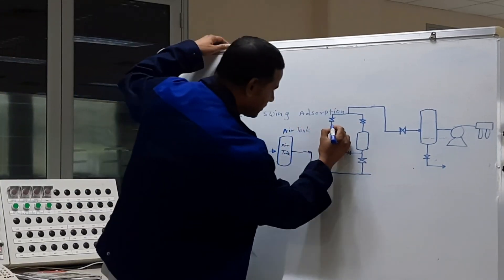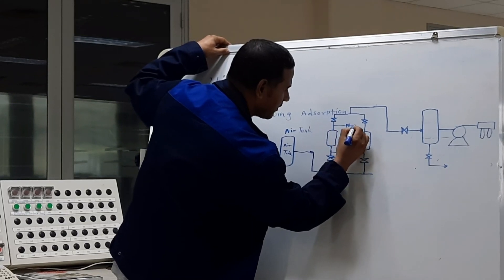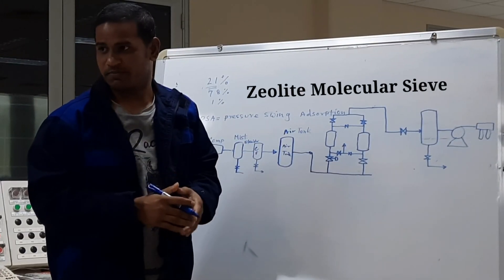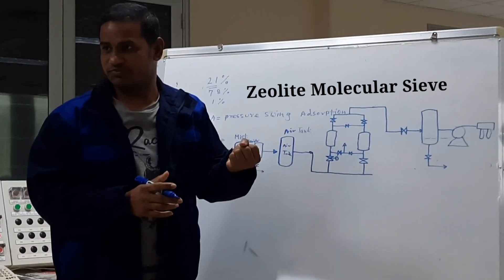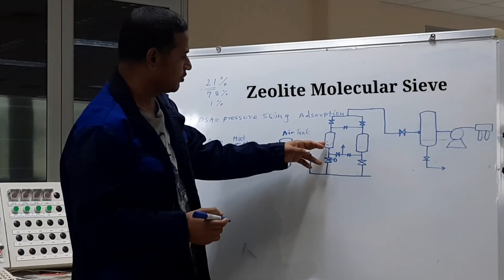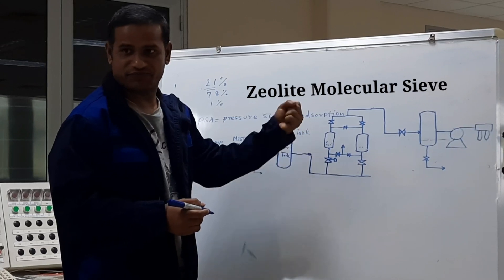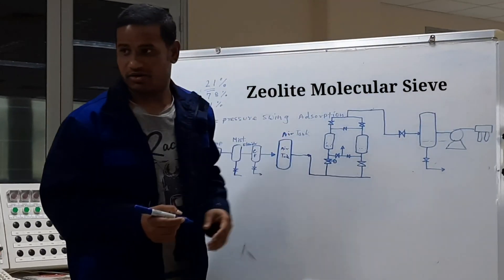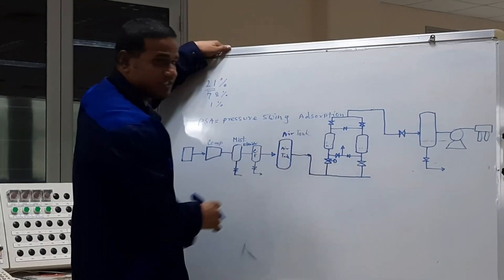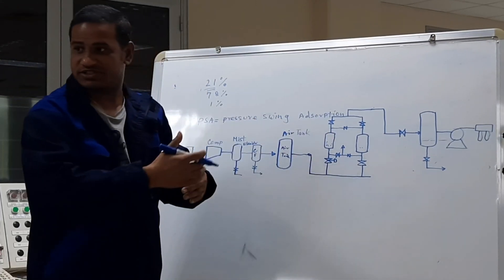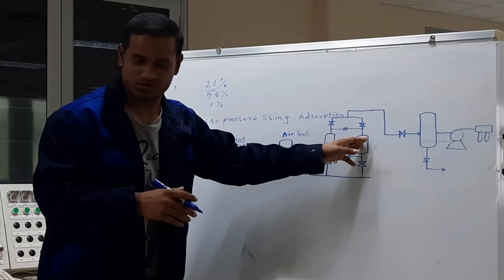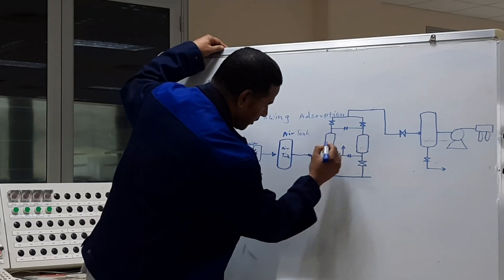Now the air goes to the Pressure Swing Adsorption unit. The main function of the PSA unit: there are two vessels. Each vessel contains zeolite molecular sieve. The main function of the zeolite molecular sieve is to adsorb the nitrogen from the air. When air passes through the zeolite molecular sieve, it collects the nitrogen and the fresh oxygen-rich air passes through to the oxygen storage tank. These two vessels work alternately — one vessel is in service, the other is in regeneration. This is a continuous process; it does not stop.